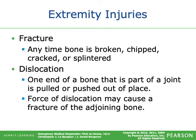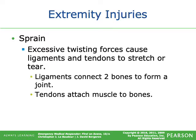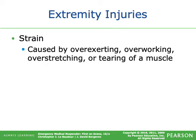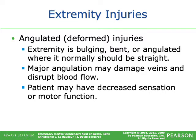A fracture is any time bone is broken, chipped, cracked, or splintered. A dislocation occurs when one end of a bone that is part of a joint is pulled or pushed out of place; this may also cause a fracture of the adjoining bone. A sprain is caused by excessive twisting force that causes ligaments and tendons to stretch or tear — ligaments connect two bones to form a joint; tendons attach muscle to bones. A strain is caused by overexerting, overworking, overstretching, or tearing of a muscle. Angulated injuries occur when an extremity is bulging, bent, or angulated where it should normally be straight, and may disrupt blood flow and decrease sensation or motor function.